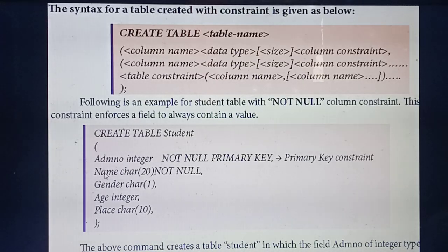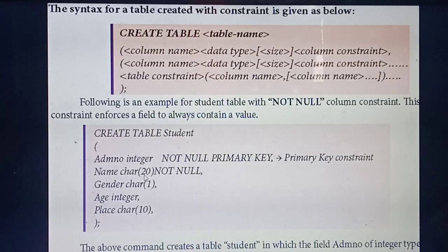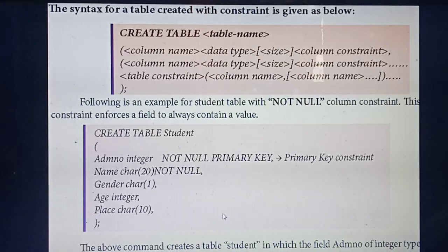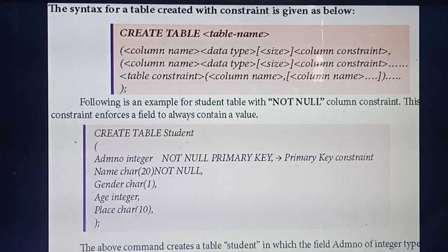The second column is Name, of data type character with size 20 — meaning you can enter names up to 20 characters. Name is also a must, so NOT NULL constraint is applied. The third column is Gender, character of size 1 — either F or M. Then Age and Place. In this example, constraints are applied only for the first two columns: Admission Number and Name. Remaining fields have no constraints.